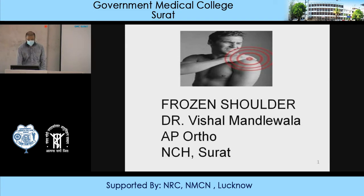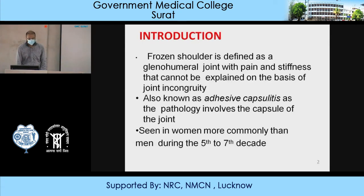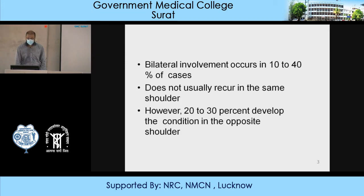What is frozen shoulder? Frozen shoulder is defined as the glenohumeral joint with pain and stiffness that cannot be explained on the basis of joint incongruity. Also known as adhesive capsulitis, as the pathology involves the capsule of the joint. Seen more commonly in women than in men during the 5th to 7th decade. Bilateral involvement occurs in 10–40% of cases and does not usually occur in the same shoulder; however, 20–30% develop the condition in the opposite shoulder.